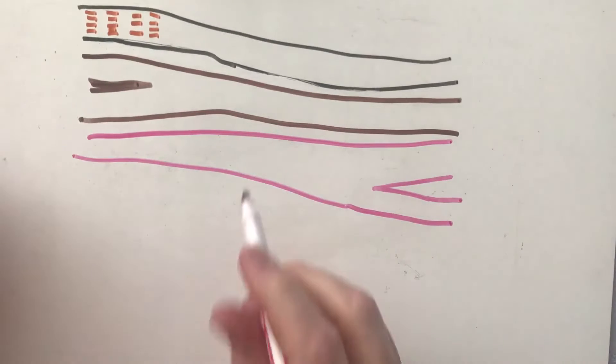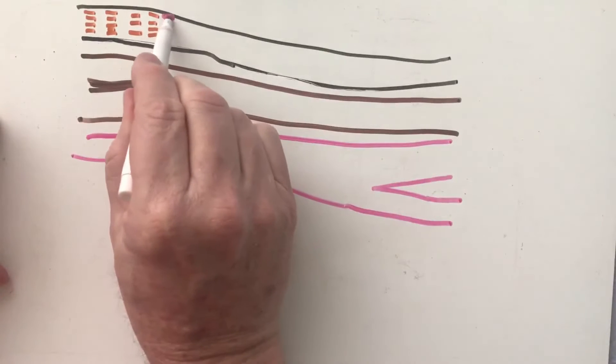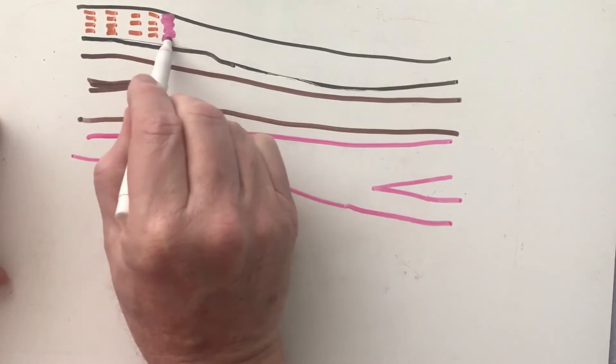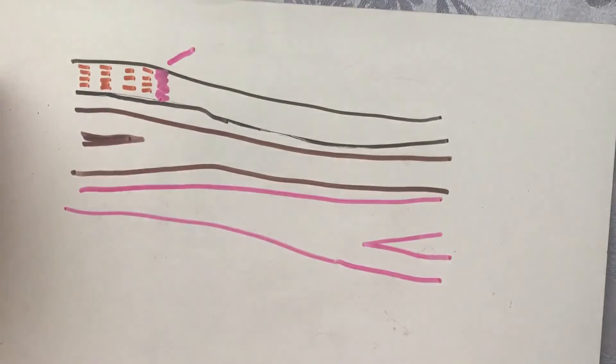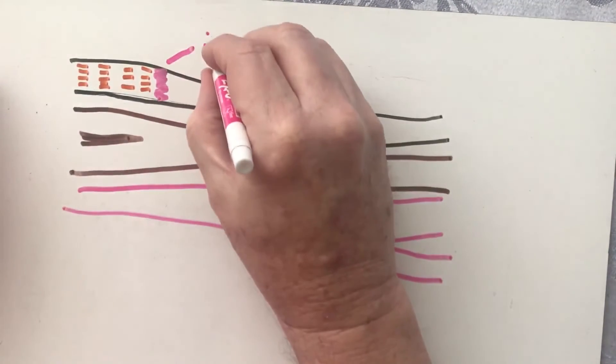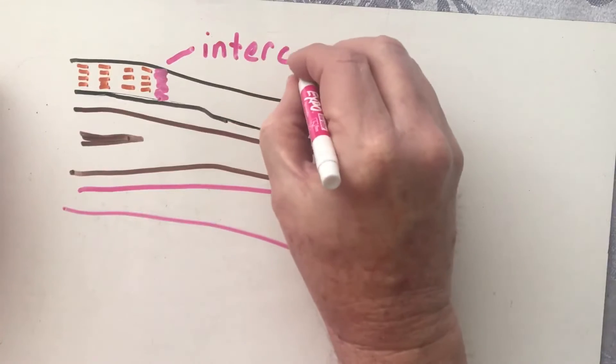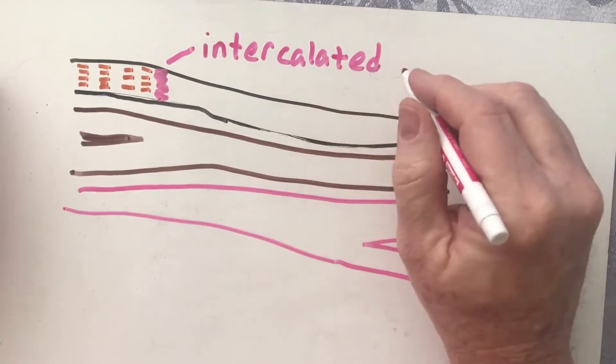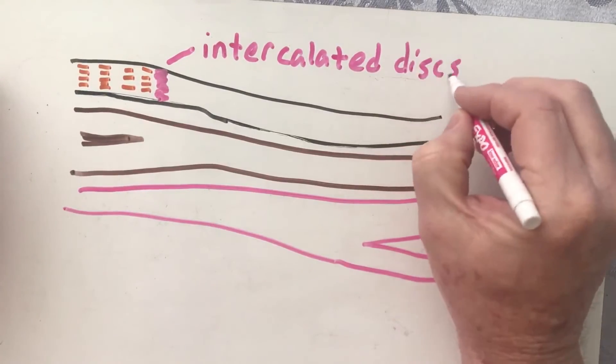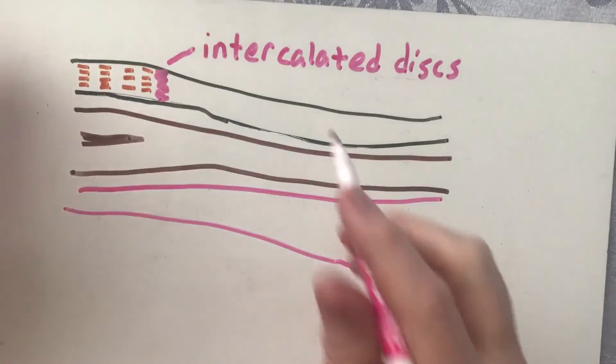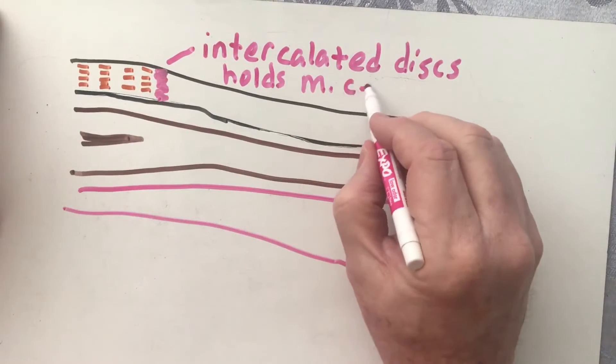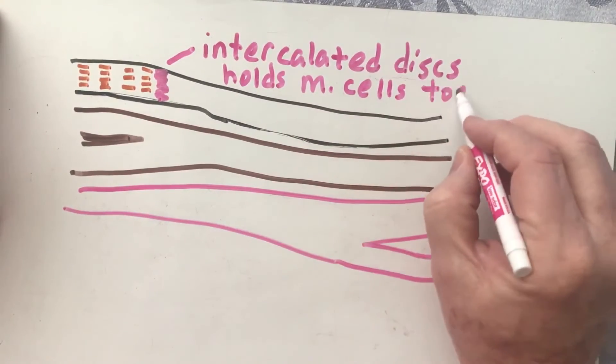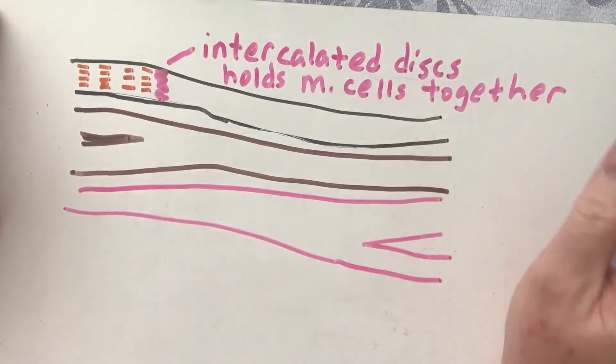And then what happens - I didn't mention this on the last part - but you actually have something called intercalated discs. So an intercalated disc, what it does is it holds muscles together. Remember M stands for muscle. So it's going to hold my muscle cells together and it's going to pass impulses from one muscle cell to the next.